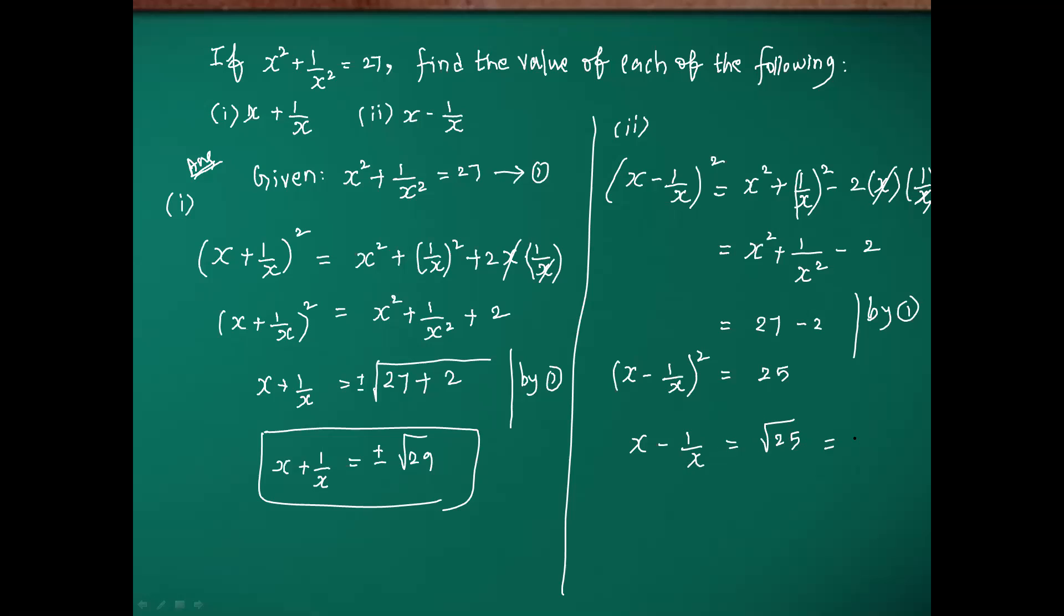When it is root of 25, this is a perfect square, I am getting 5. Therefore, x minus 1 by x equals plus or minus 5. This is our required answer for x minus 1 by x. I hope you will understand. Please copy this.